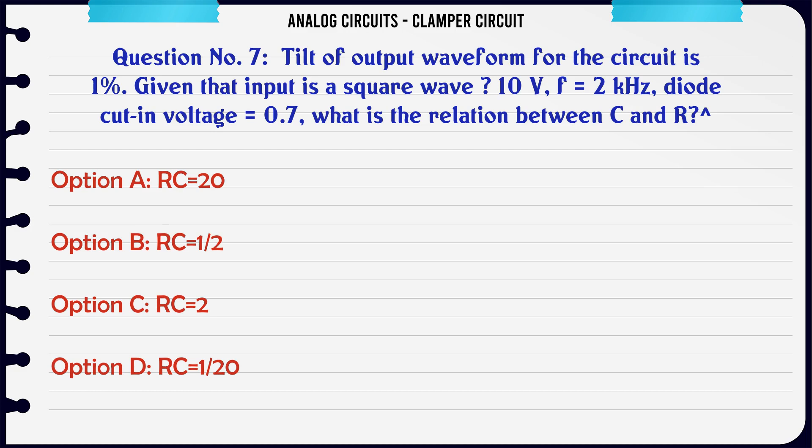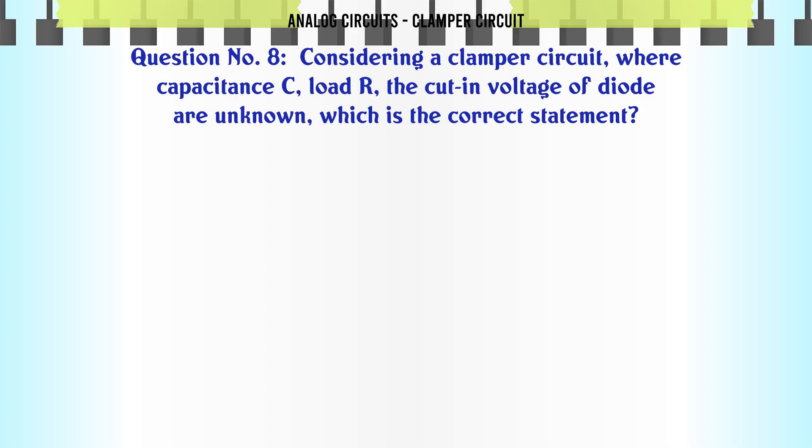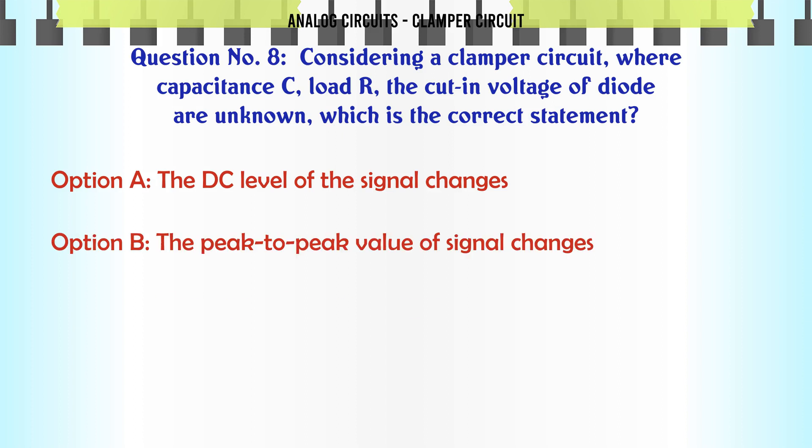Tilt of output waveform for the circuit is one, given that input is a square wave 10V, frequency 2 kHz, diode cut-in voltage 0.7V. What is the relation between C and R? A: RC = 20, B: RC = 1/2, C: RC = 2, D: RC = 1/20. The correct answer is RC = 1/20.